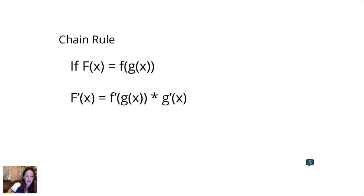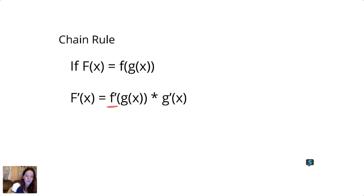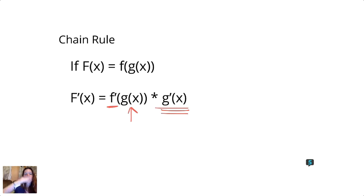I want to formalize that. Let's say we have a function — we'll call it big F of x — and it equals f of another function. There's an inside function g of x and an outside function f. When I take the derivative of that, basically you're going to take the derivative of the outside function — f prime — copy the inside function (the inside stays the same), but then you multiply by the derivative of the inside function. That's what we call the chain rule: derivative of the outside, copy the inside, then take the derivative of the inside.